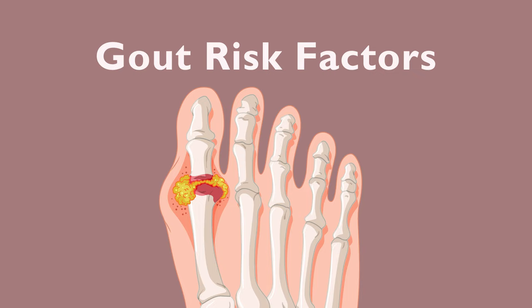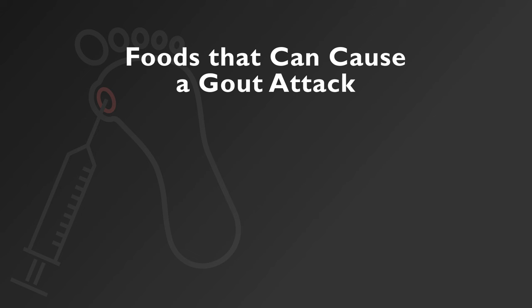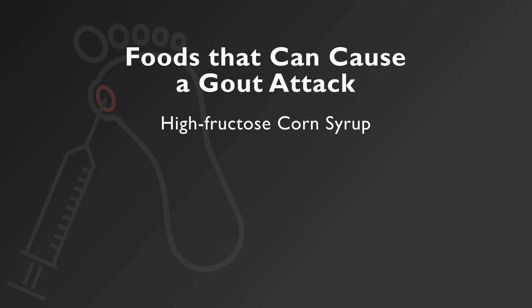Are there risk factors for gout? Yes — these are essentially risk factors or causes for elevated uric acid levels. The first one is diet. Eating foods high in purine content such as high fructose corn syrup-containing foods, game meats, seafood, and alcohol can increase uric acid levels and lead to gout.